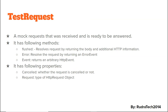The next object is the TestRequest object, which mocks the request that is received and is ready to be answered. It has the following methods: flush, which resolves the request by returning the body and additional HTTP information like status or error message; error, which resolves the request by returning an error event; and event, which returns an arbitrary HTTP event. It also has properties: cancelled, which checks whether the request is cancelled, and request, which is of type HttpRequest.